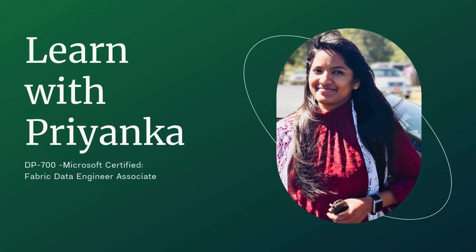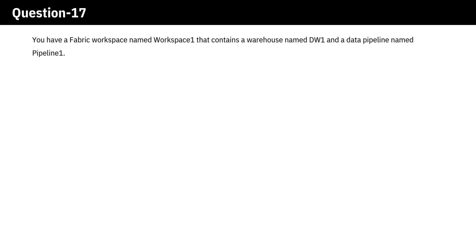Welcome to Learn with Priyanka. Question. You have a fabric workspace named Workspace 1 that contains a warehouse named DW1 and a data pipeline named Pipeline 1.